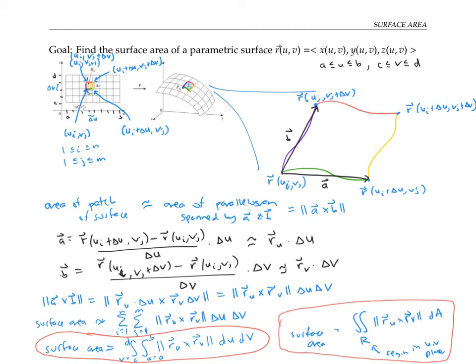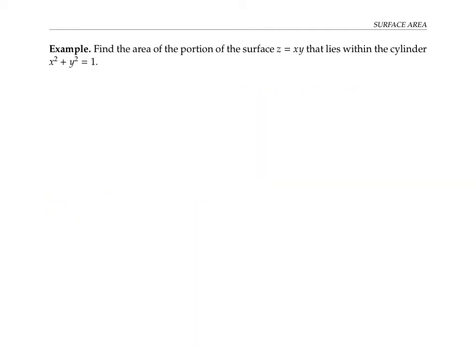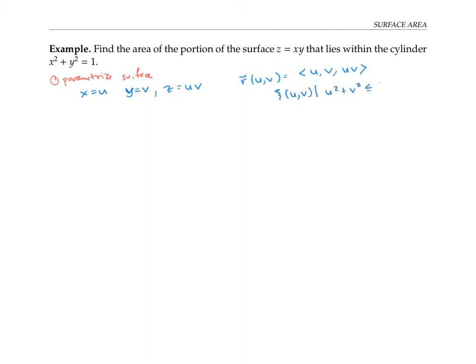Now that we've got a formula for surface area, let's work an example. I want to find the area of the portion of the surface z equals xy that lies within the cylinder x squared plus y squared equals 1. I'll use the copycat parameterization: x equals u, y equals v, z equals u times v. In vector notation, r(u, v) = (u, v, uv). Since we're within the cylinder, u and v range over the disk where u squared plus v squared is less than or equal to 1.